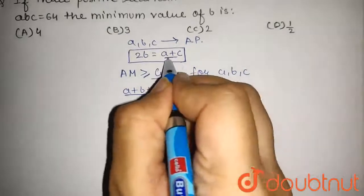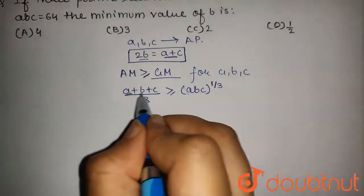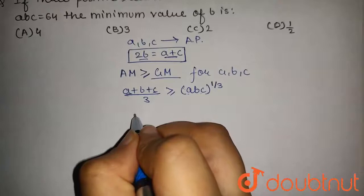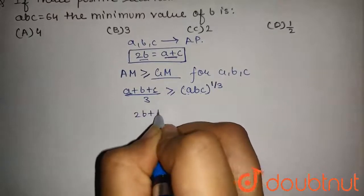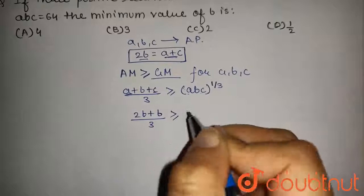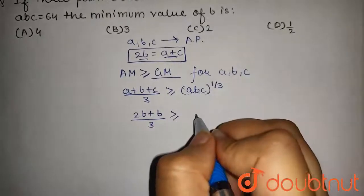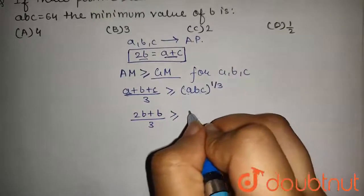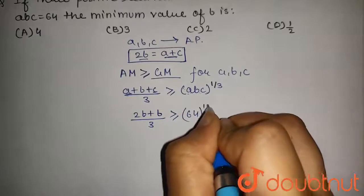Now we can write A plus C as 2B. So it will be 2B plus B upon 3 is greater or equal to ABC is given as 64, so it will be 64 to the power 1 by 3.